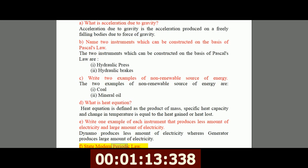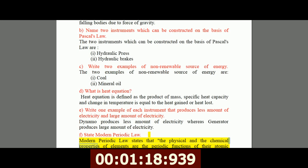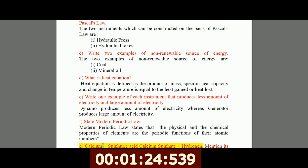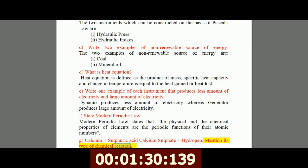F, state modern periodic law. Modern periodic law states that the physical and the chemical properties of element are the periodic functions of their atomic numbers. G, calcium plus sulfuric acid gives calcium sulfate plus hydrogen. Mention its type of chemical reaction. It is single displacement reaction.